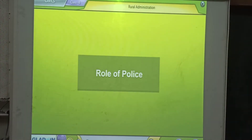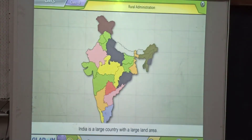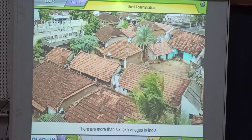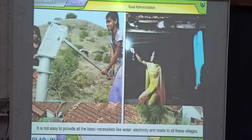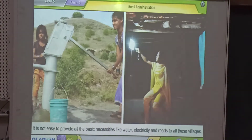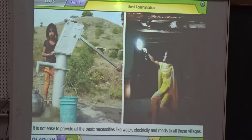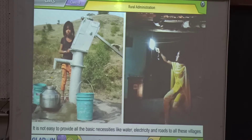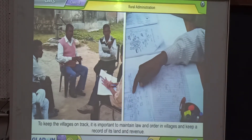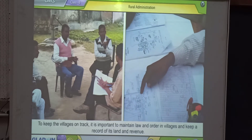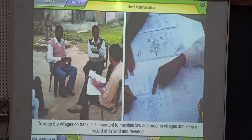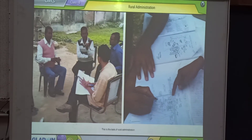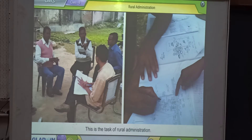Role of Police. India is a large country with a large land area. There are more than 6 lakh villages in India. It is not easy to provide all the basic necessities like water, electricity, and roads to all these villages. To keep the villages on track, it is important to maintain law and order in villages and keep a record of its land and revenue. This is the task of Rural Administration.